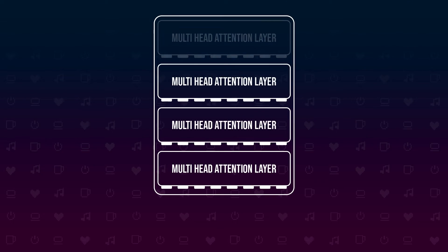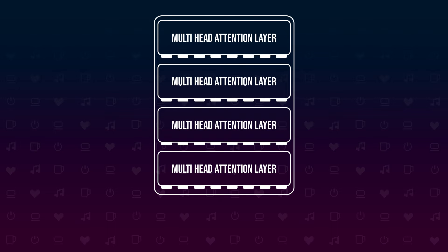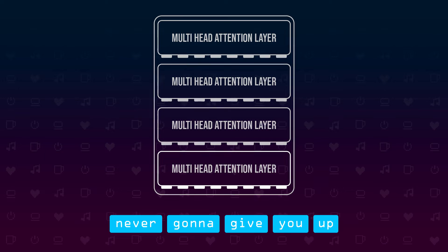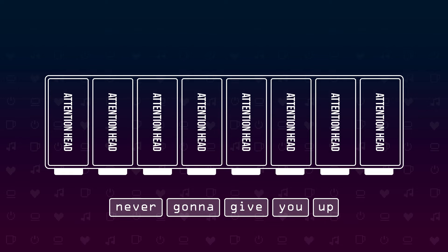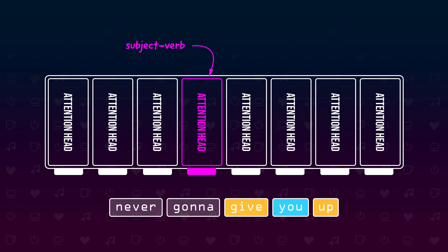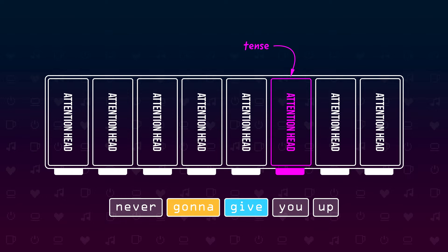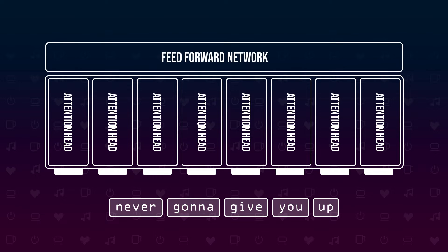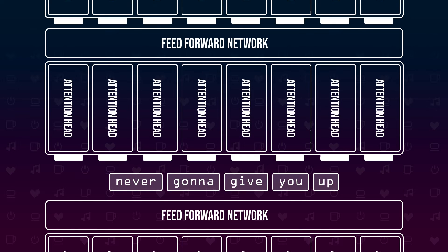Now let's zoom in and have a look at what an encoder looks like. An encoder consists of multiple so-called multi-head attention layers stacked upon each other. These multi-head attention layers are trained to understand the input text, which is handed in all at once to the first layer. Each attention head in a multi-head attention layer looks for different things in the input — there might be one attention head that searches for subject-verb combinations, one looking for words indicating tense, and one that looks for negations. All the independent outputs of the attention heads are then combined and made sense of by a normal feed-forward network.